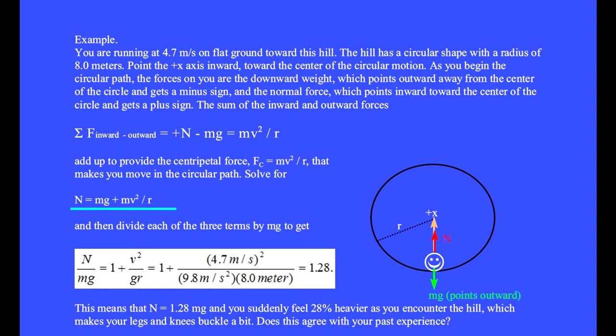Solve for N equals mg plus mV²/R, and then divide each of the three terms by mg to get N/mg equals 1 plus V²/gR equals 1.28. This means that N equals 1.28mg, and you suddenly feel 28 percent heavier as you encounter the hill, which makes your legs and knees buckle a bit. Does this agree with your past experience?